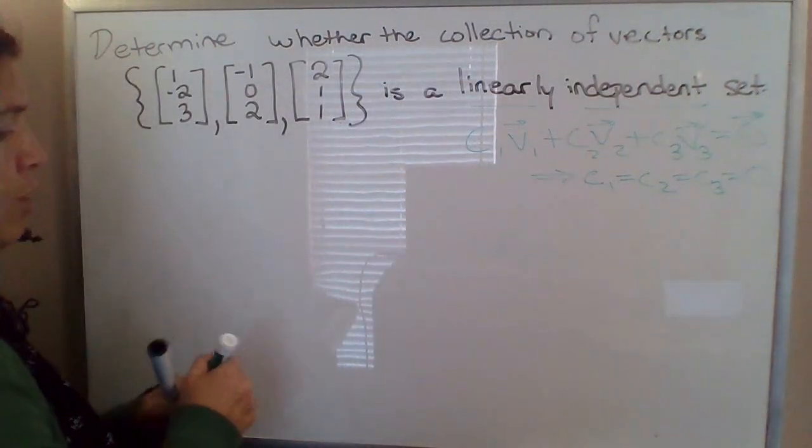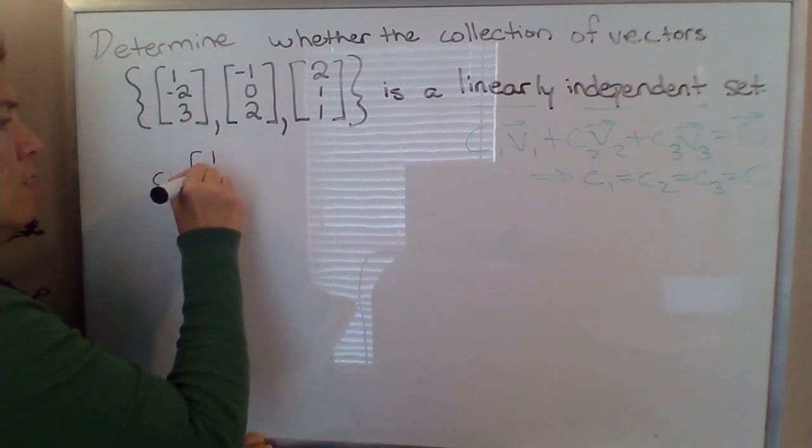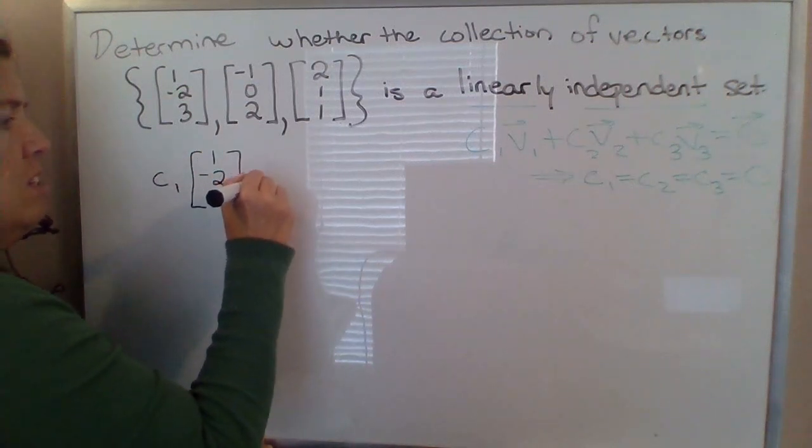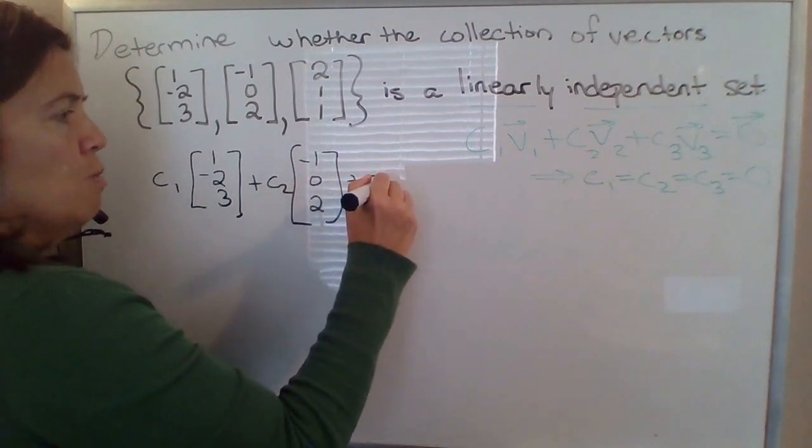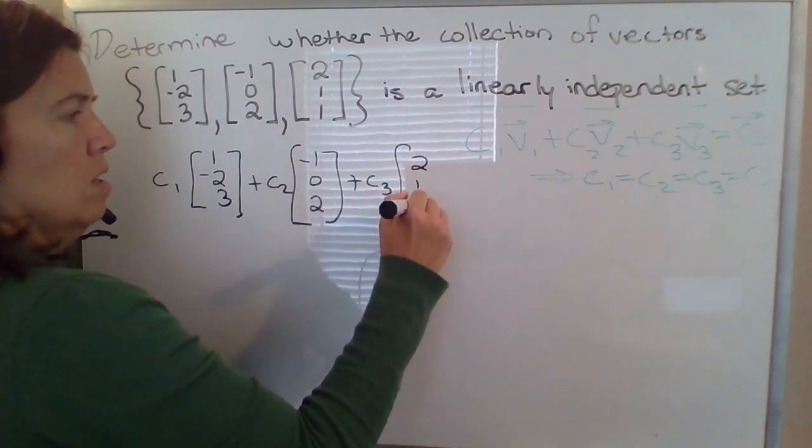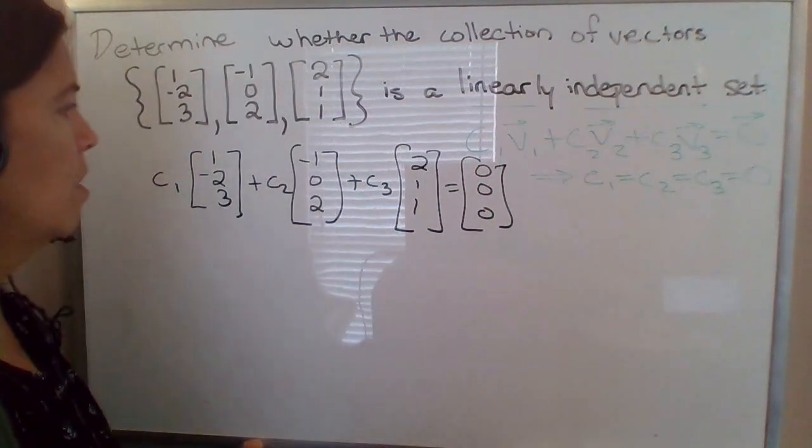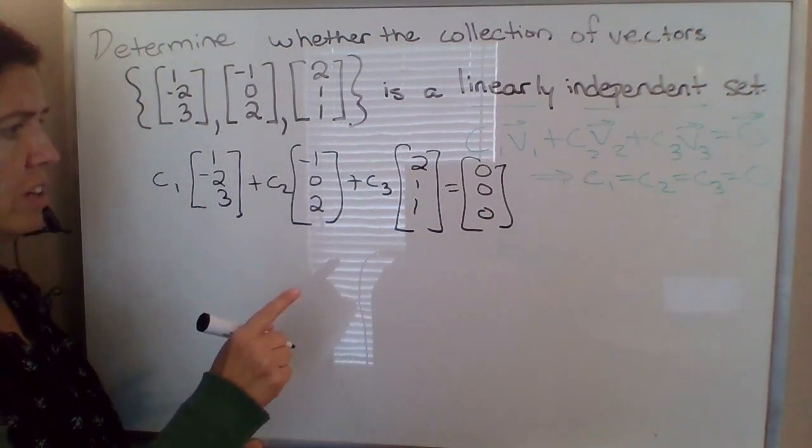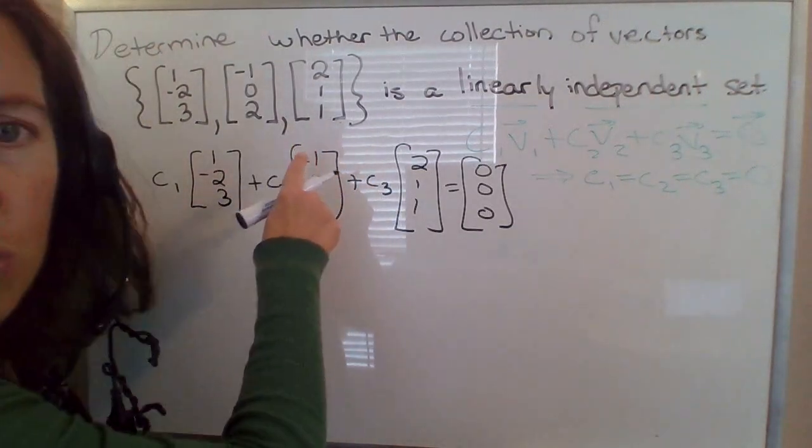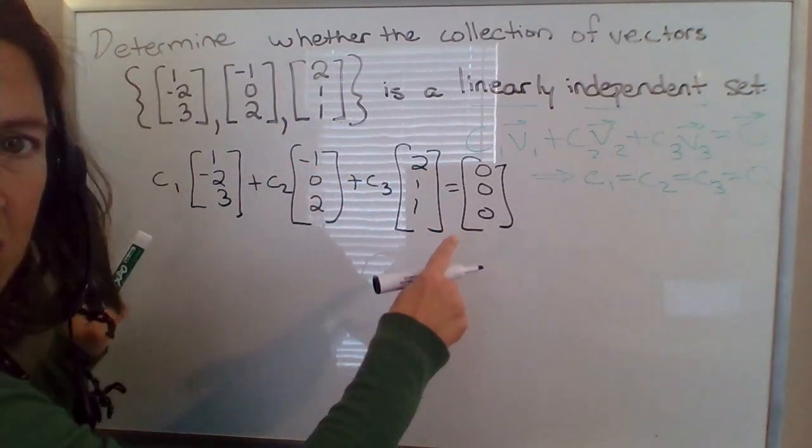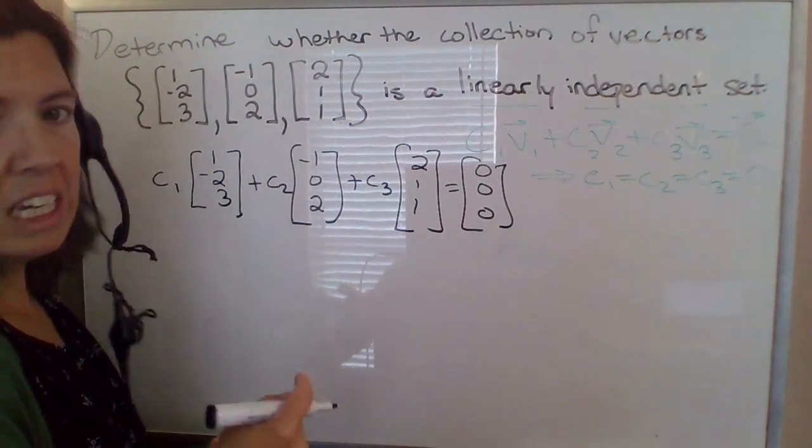So the way to figure this out then would be to set up that equation. So say we have c1 times vector 1 plus c2 times vector 2 plus c3 times vector 3, equal to the zero vector in R3. We want to find the solution set to this equation. If the solution set contains non-trivial solutions, then the collection of vectors is linearly dependent. If this system has only the trivial solution, c1, c2, c3 all have to be zero, then it's a linearly independent set.